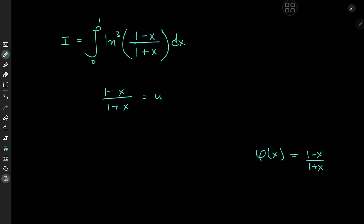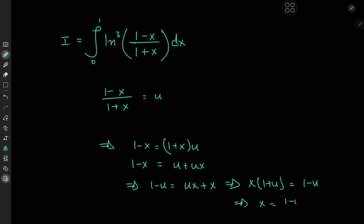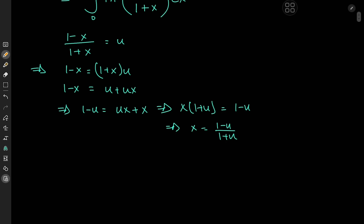If you call the left-hand side y, then we have identical relations for x in terms of y and y in terms of x. Let me show you that quickly. We expand using 1 plus x: we have 1 minus x equal to (1 plus x) times u, so u plus ux equals 1 minus x, which implies 1 minus u equals ux plus x, and therefore x times (1 plus u) equals 1 minus u. This means x equals (1 minus u)/(1 plus u). Now we can transform the differential element using the quotient rule.